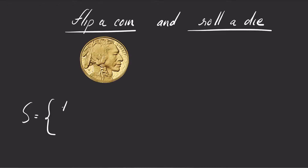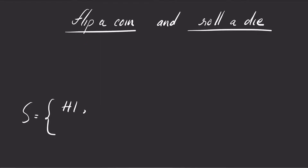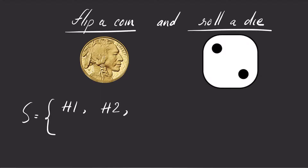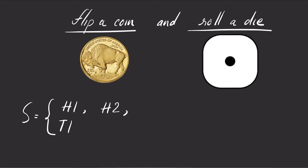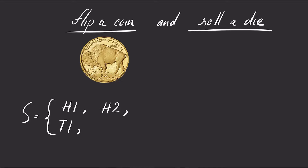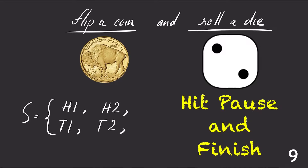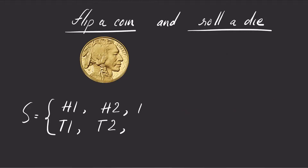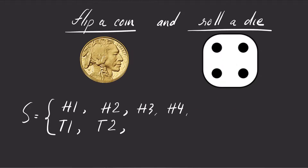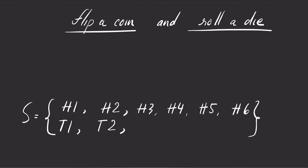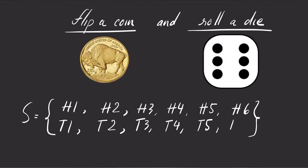If you flip a coin and roll a die, you might get a head and a 1, or a head and a 2, or a tail and a 1, or a tail and a 2. By listing all possible outcomes in the sample space, we can see that the number of all possible outcomes is 12.